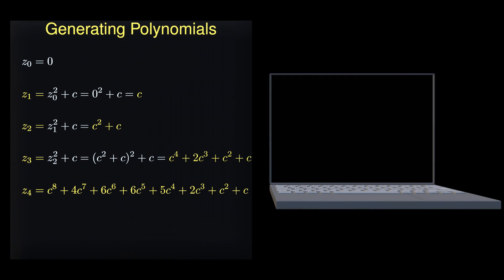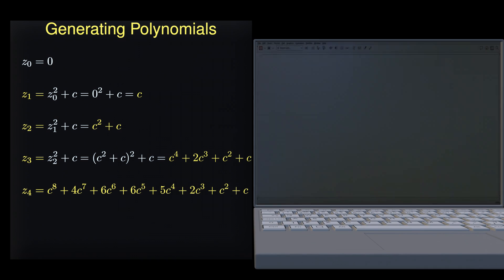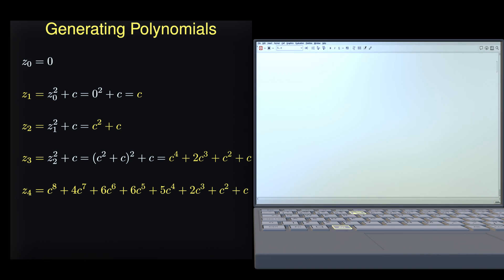However, as each iteration progresses, the degree of the polynomial doubles. That makes the computation increasingly cumbersome. By the tenth iteration, the polynomial contains over 1000 terms. This makes it impractical to write it down entirely.